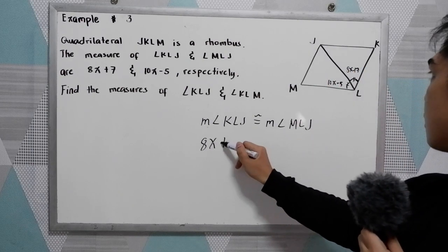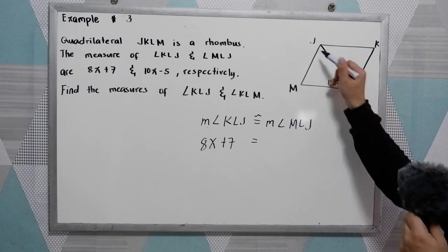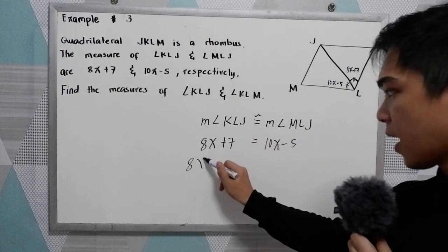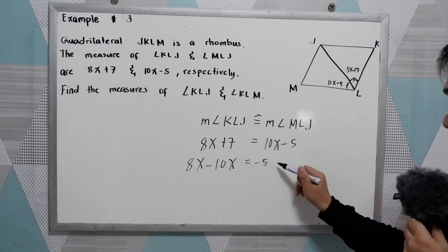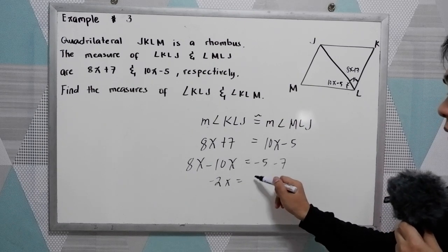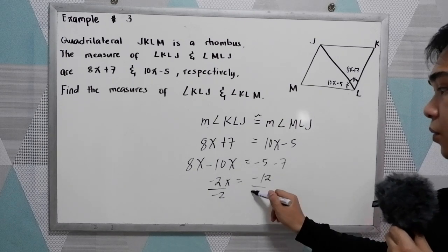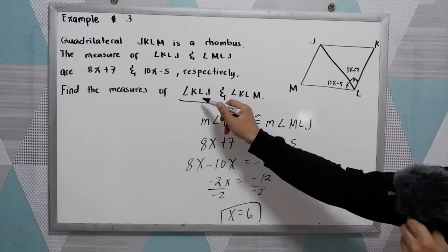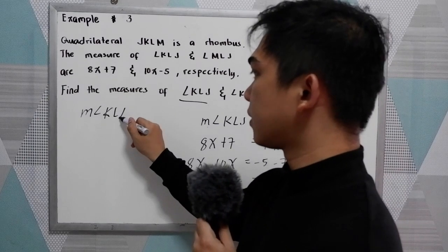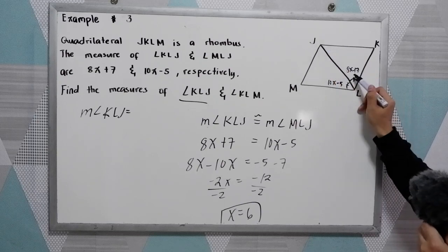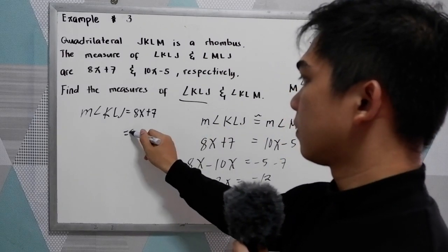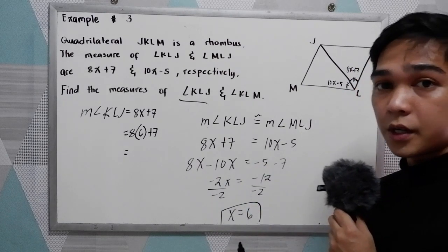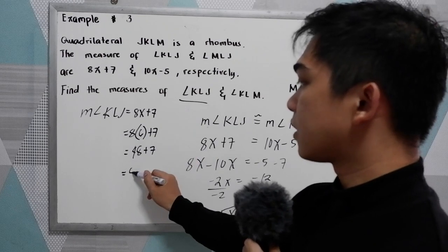So, 8X + 7 equals 10X minus 5. Solving: 8X minus 10X equals negative 5 minus 7, giving negative 2X equals negative 12. Dividing by negative 2, X equals 6. Now finding the measure of angle KLJ: 8X plus 7, substituting X equals 6, gives 8 times 6 equals 48, plus 7, that is 55 degrees.